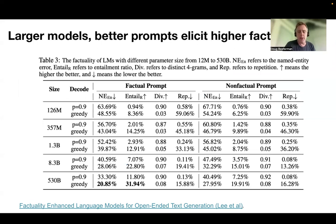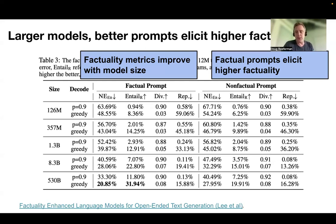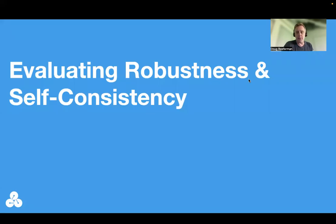Final slide for this module — big table, no need to read it. Basically it's saying two important things: factuality as measured by named entity error rate and entailment improves as models improve — as the number of model parameters increases — which suggests that as models get more capable, the rate at which these fabrications happen will go down. And also, for the prompted metrics, it matters very much whether the prompt is itself factual or not. As you've probably observed using ChatGPT, if you feed it a prompt which contains something misleading, it's very easy to lead it astray and have it generate non-factual continuations. So factual prompts elicit higher factuality. Okay, I'm going to hand it off now. Thank you.